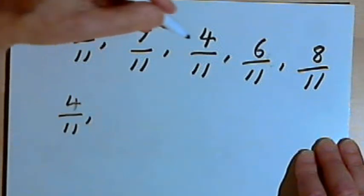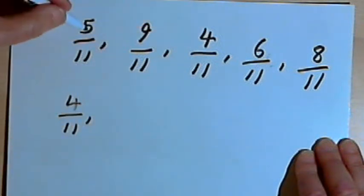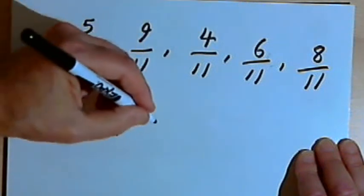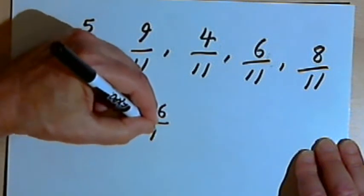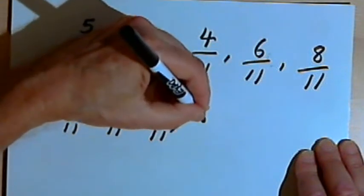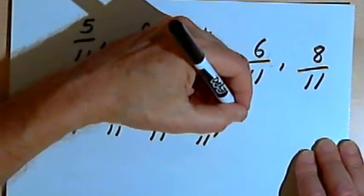After that I'll just look for the next number bigger than 4, and I've got 5 over 11. So that's my next fraction. Then I've got 6 over 11. So that'll be the third. After that it goes to 8, 8 over 11, and then 9 over 11.